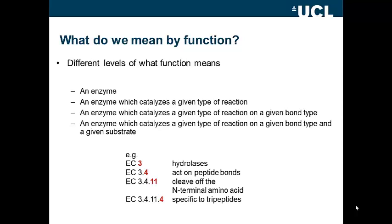Alternatively, the Gene Ontology defines three hierarchies which specify the biological process — the process in which the protein is involved — the cellular component, where in the cell the process occurs, and the molecular function, the precise activity of the protein. In other words, the what, the where, and the how.